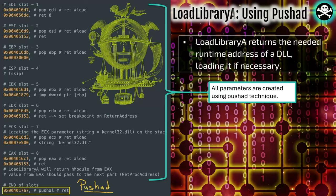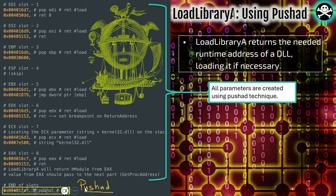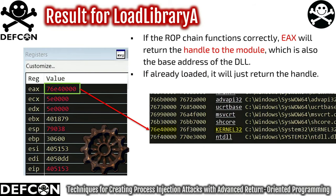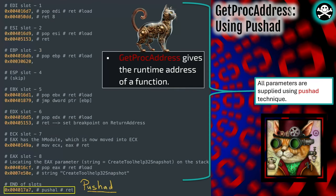For LoadLibrary we use push/add in a pattern. We load the particular values into registers, do push/add, and that causes them to go to a predefined location. Looking at our stack values, they correspond to our pattern: we have RED8, meaning we do a ROP NOP and skip eight bytes, then do a jump EBP dereference to invoke LoadLibrary, providing a return address and a parameter. We get exactly the result we want — the base address of NTDLL. We then use that subsequently for GetProcAddress.